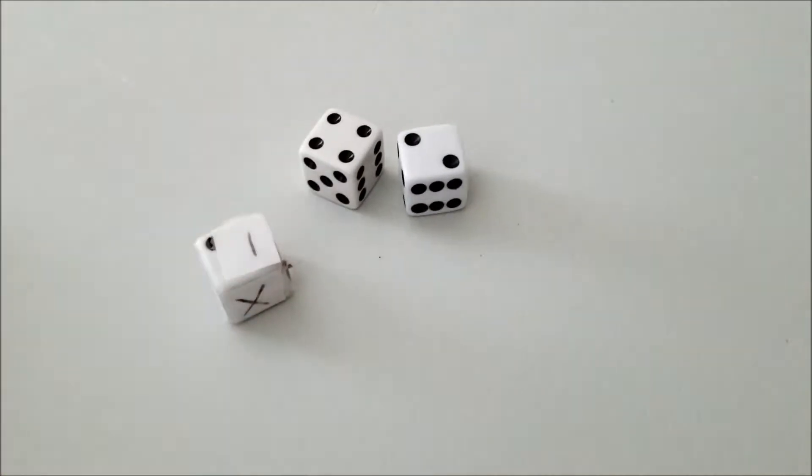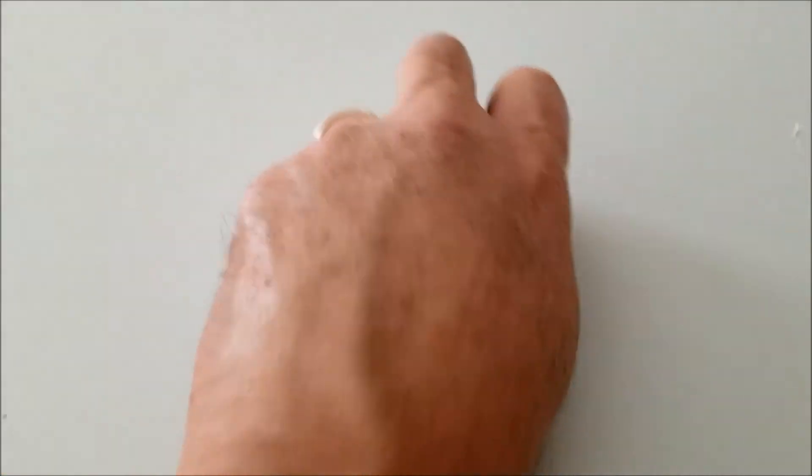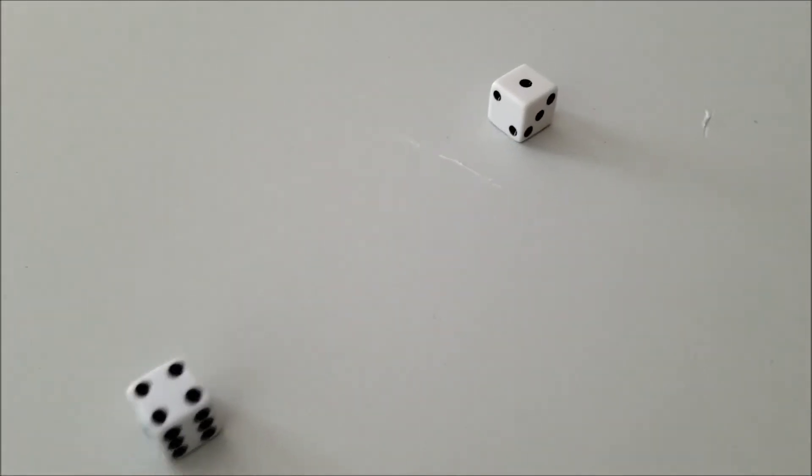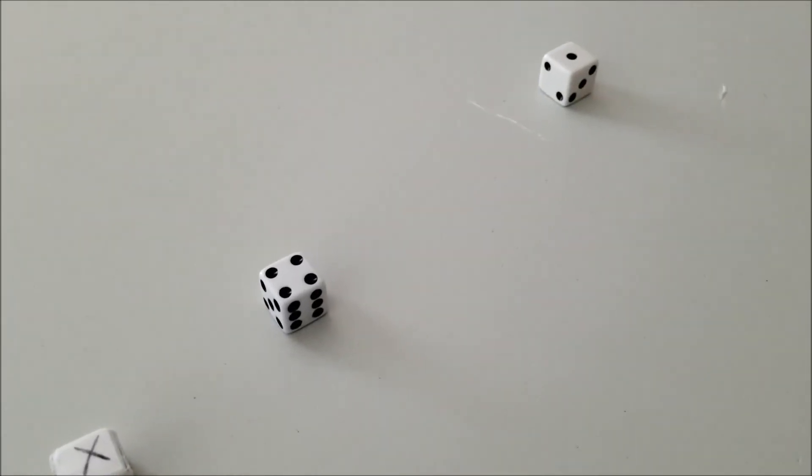So what you're basically going to do is have your kids roll these three dice and we have a five and a five and we have times. So they would just go five times five and get 25. And so this is just going to keep their math sharp. You have a four, you have a one and you have multiply. So they're going to go four times one is four.